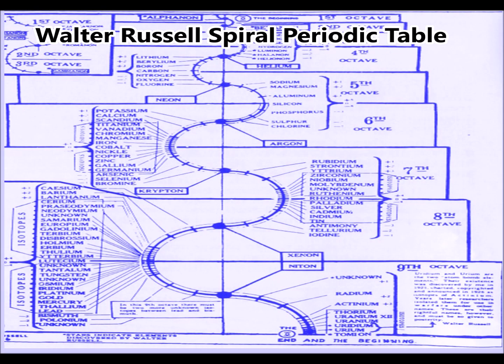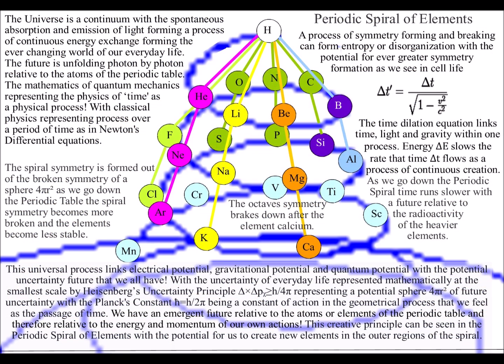This theory takes the spiral periodic table of Walter Russell and explains its structure as a three-dimensional process of spherical symmetry forming and breaking.